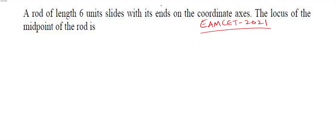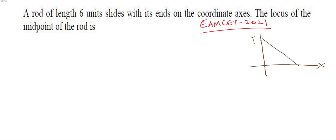A rod of length six units slides with ends on the coordinate axis. We need to find the locus of the midpoint of the rod. The rod slides on the x-axis and y-axis. The rod length is six units. Point A is on the x-axis and point B is on the y-axis, with O as the origin.